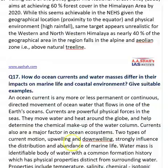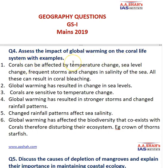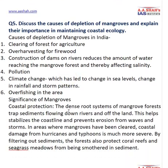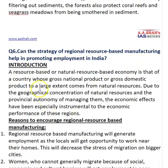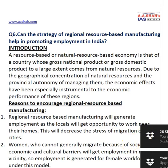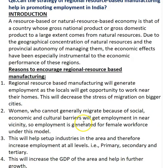Analyzing the paper overall: the coral reef question was not very tough — even with basic news reading, you could answer it. The same applies to the mangroves question. Basic books, NCERTs, and a newspaper would have been sufficient. The regional resource-based manufacturing strategy question required only general common knowledge of what resource-based manufacturing is.